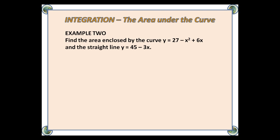Example 2: Find the area enclosed by the curve y = 27 - x² + 6x and the straight line y = 45 - 3x.